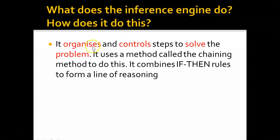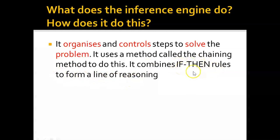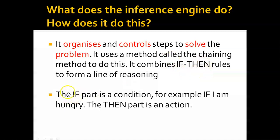What does the inference engine do and how does it do this? It organizes and controls the steps to solve a problem. It uses a method called the chaining method, combining if-then rules to form a line of reasoning. For example: if an animal has feathers, then it is a bird. The 'if' part is a condition.